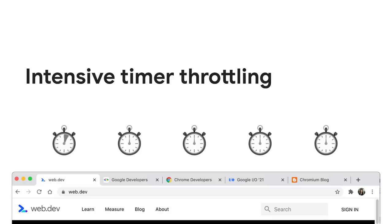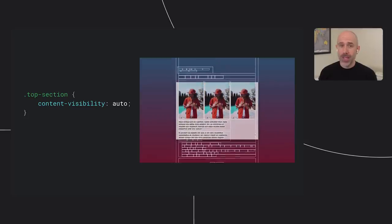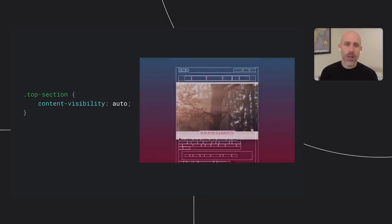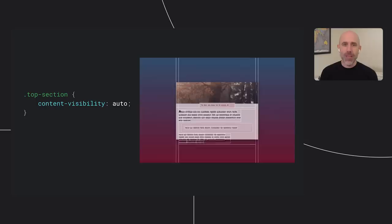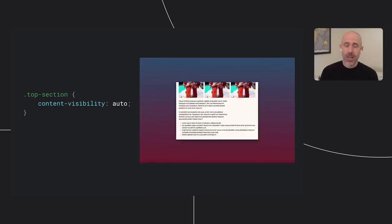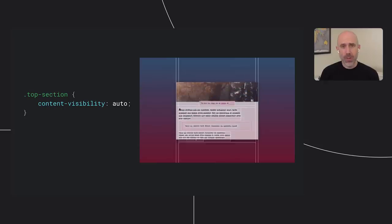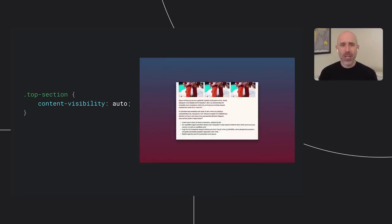In this spirit, earlier this year we shipped a new Chrome feature called intensive timer throttling, which detects when a browser tab has been in the background for more than five minutes. As long as the tab isn't playing audio or video, Chrome slows down how frequently it executes timer-based JavaScript code on that tab. We've also applied this concept with CSS by shipping support for a new CSS property called content-visibility. When you set this property to auto on an element, you give the browser permission to skip rendering the contents of that element if it isn't currently visible on the user's display — leading to a dramatic speed boost for content-heavy sites.